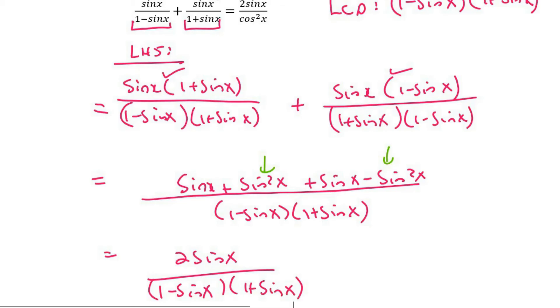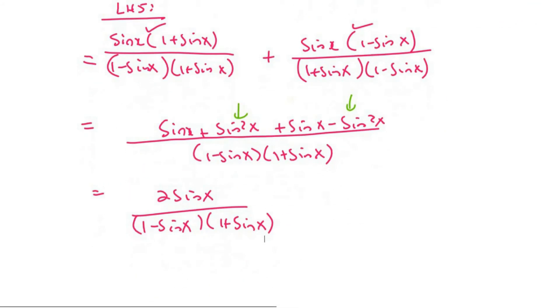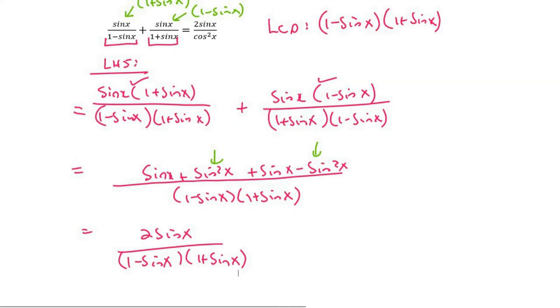Okay, so it might seem a bit challenging on where are we going to go from here because we're trying to get this. We're trying to get 2 sine x over cos squared x. So we already have the top part sorted. So what we can do, I can sort of see something happening here. We're going to multiply the bottom out.